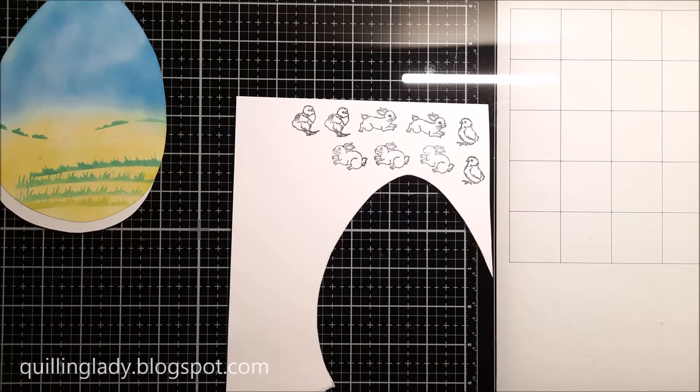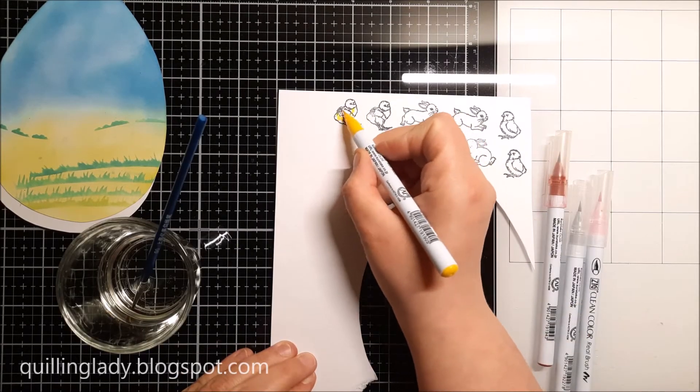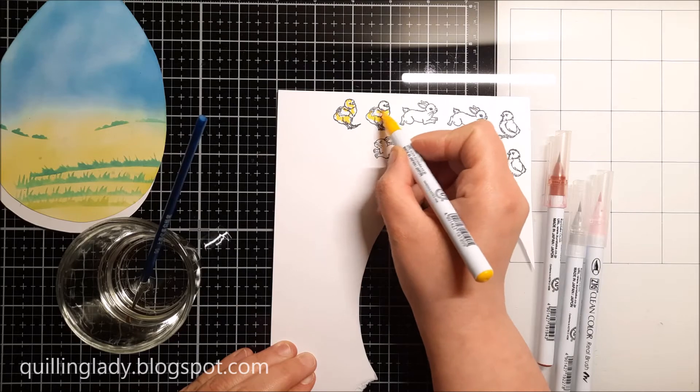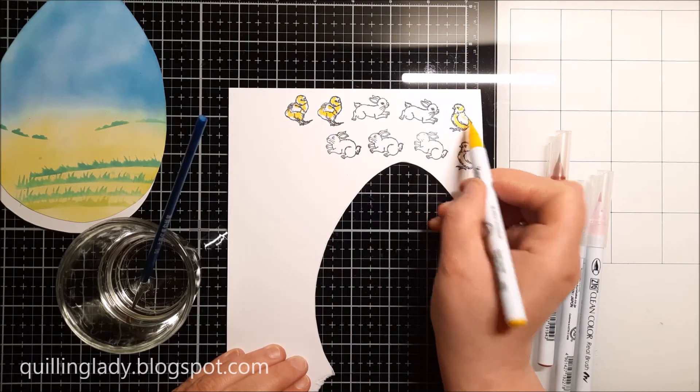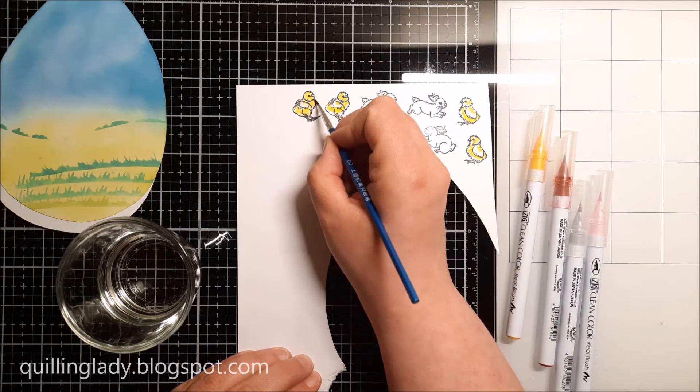Whenever you stamp some small images, sometimes the stamp is not very clear, so yes, you can stamp again and no one will ever know. I wonder, do you actually use Zig markers in your paper crafting? Have you ever tried them?